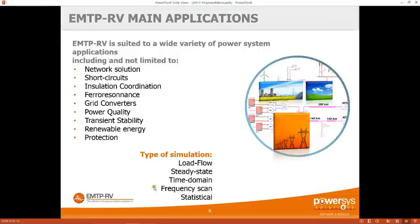There are two other convenient simulation types. The first is the frequency scan. You use this when, for example, you want to study the connection of a power plant to a network and the plant might inject harmonics. You do a frequency scan at the point of connection to identify all natural frequencies of the network. The output is the magnitude and angle of the impedance over a large frequency range, allowing you to identify poles and zeros and ensure injected harmonics are not close to them.